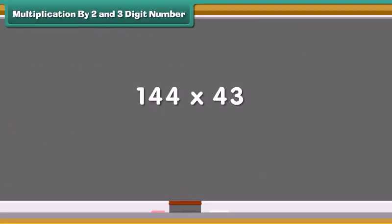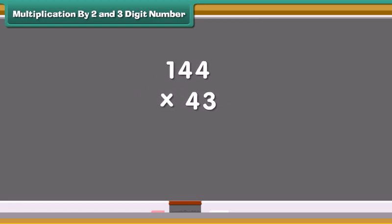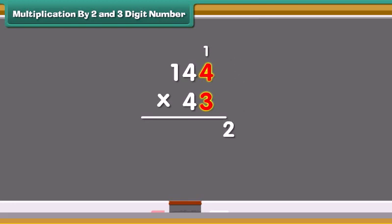Let us multiply 144 by 43. Start multiplication from one's place. 3 times 4 are 12. Write 2 in the one's place and carry the one forward to the tens place.